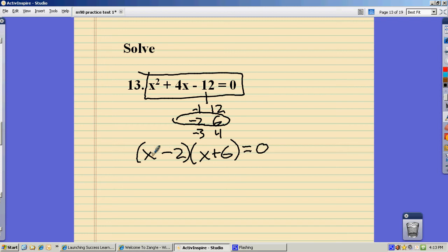And then these two things are multiplied together, the x minus 2 and the x plus 6, giving me a 0. So I can use that zero product property. That means this has to be a 0, or this has to be a 0, or both.